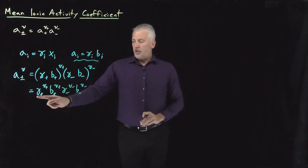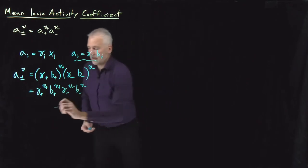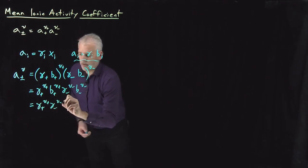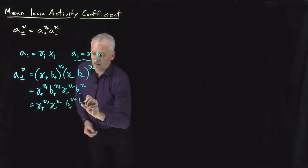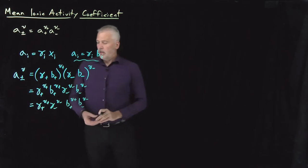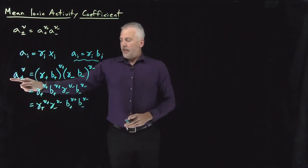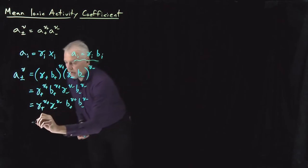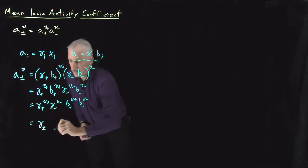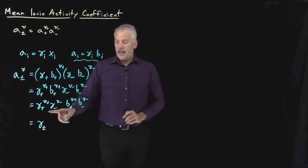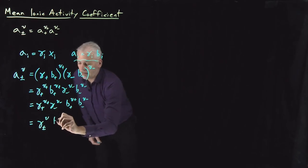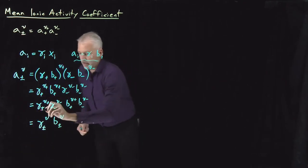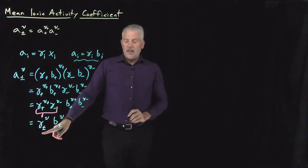If we collect the gamma terms together and the molality terms together, we obtain: gamma plus to the ν+ power times gamma minus to the ν− power, multiplied by the molality terms. So now we have something that looks like an activity equal to some activity coefficients multiplied by some combination of the molalities. We can rewrite these as a combined activity coefficient and a combined molality, each raised to some total power.